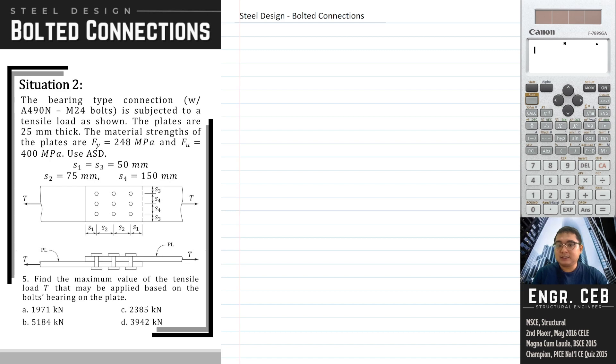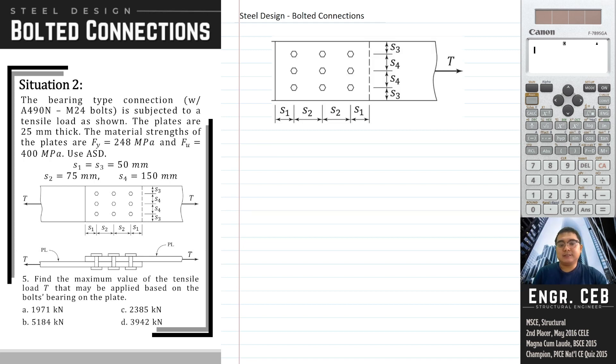Problem 5: find the maximum value of the tensile load T that may be applied based on the bolts bearing on the plate. Let's say we analyze again the upper plate and then we label the bolts. So let's say this is bolt 1, 2, 3, 4, 5, 6, 7, 8, 9.